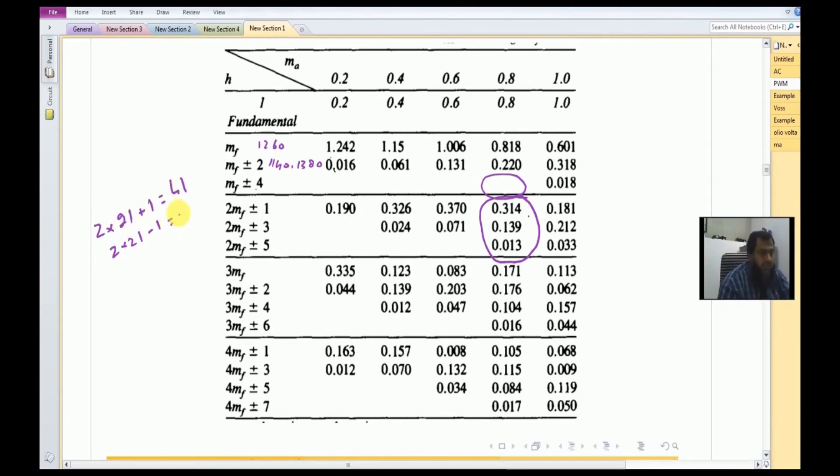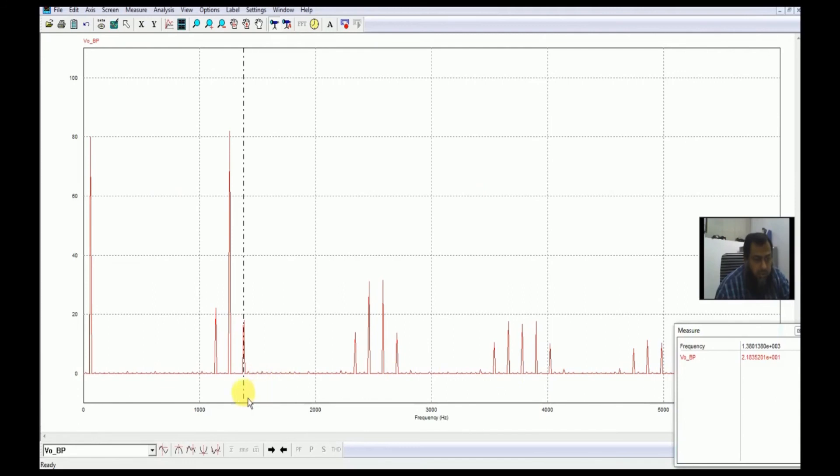If we multiply this 43 by the fundamental frequency, that comes out to be equal to 2580 Hertz. So at this 2580 Hertz, if I move here, you see here at this 2580 Hertz we have 3.15 volts available.